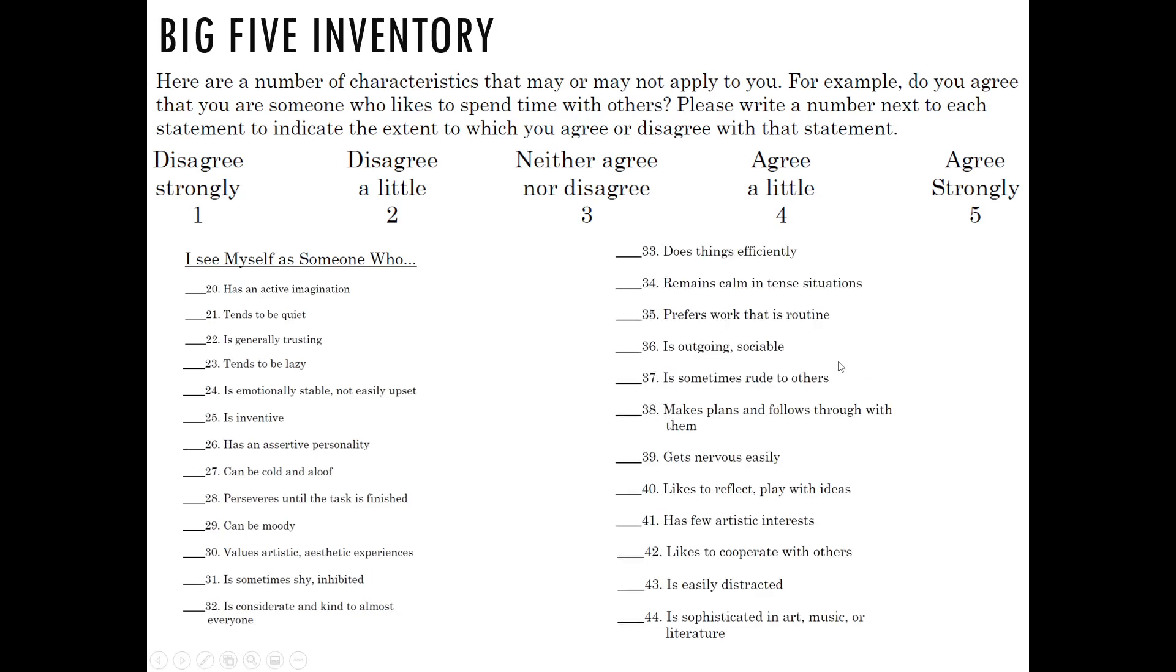Thirty-three: does things efficiently. Thirty-four: remains calm in tense situations. Thirty-five: prefers work that is routine. Thirty-six: is outgoing, sociable. Thirty-seven: is sometimes rude to others. Thirty-eight: makes plans and follows through with them. Thirty-nine: gets nervous easily. Forty: likes to reflect, play with ideas. Forty-one: has few artistic interests. Forty-two: likes to cooperate with others. Forty-three: is easily distracted. Forty-four: is sophisticated in art, music, or literature.